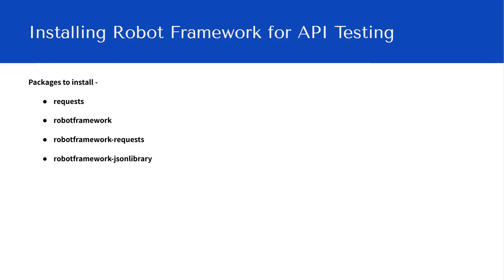There are four packages, or libraries, that you need to install when using Robot Framework for API testing: the Requests library, Robot Framework, the Robot Framework JSON library, and Robot Framework JSON Request.